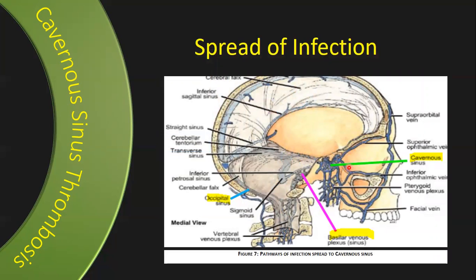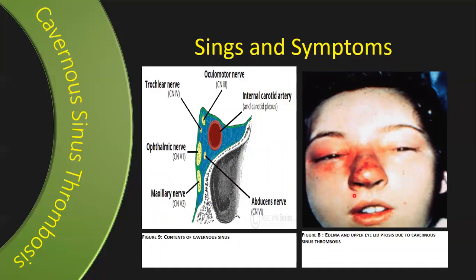How can infection reach the cavernous sinus? There are two pathways. The anterior pathway is via the facial vein, then through the superior ophthalmic veins to the cavernous sinus. The posterior pathway is through the facial vein reaching the pterygoid venous plexus, then up to the cavernous sinus. The most dangerous area is the upper anterior teeth region and the sinuses — any infection there, including sinusitis, can lead to this condition.